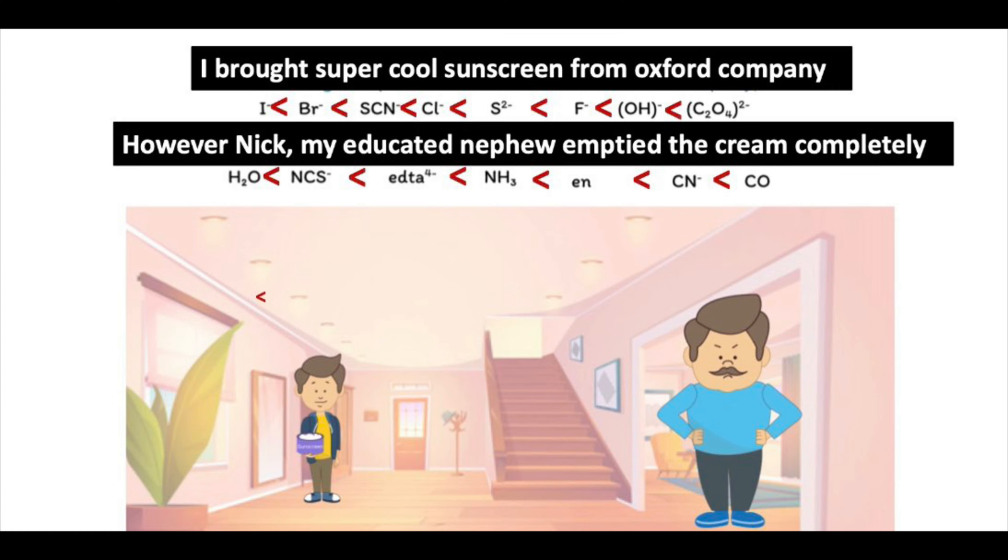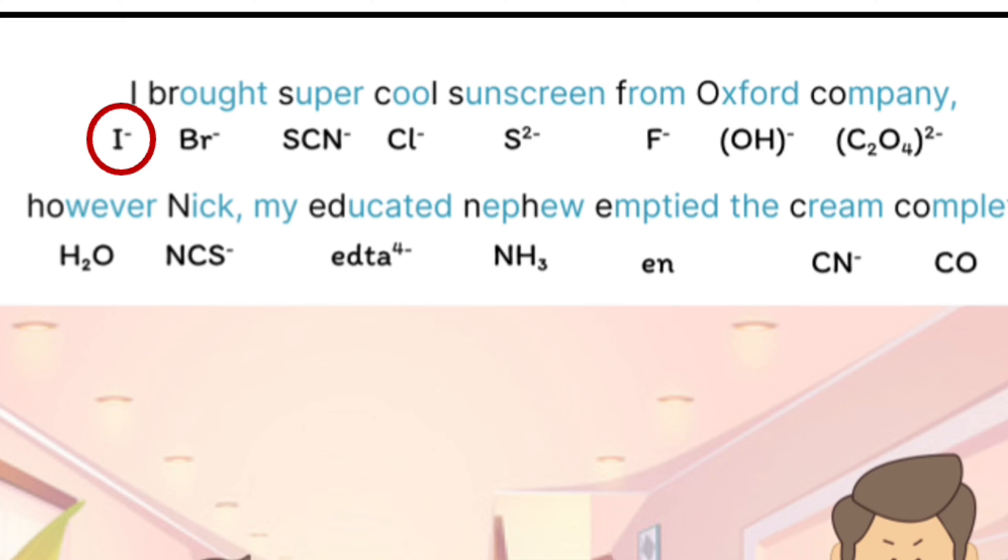To know the strength of the ligand, let us see a beautiful mnemonic: I brought a super cool sunscreen from Oxford company. However Nick, my educated nephew, emptied the cream completely. Here I stands for iodide ion, brought for bromide ion,